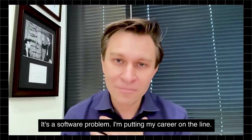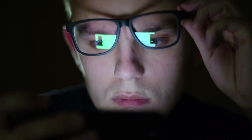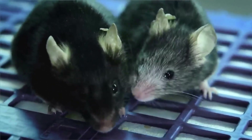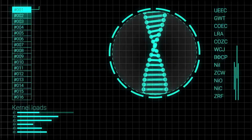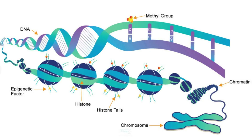It's a software problem — I'm putting my career on the line. What if I told you that these two mice were the same chronological age, but one is physically older because of a software glitch? This glitch is what Dr. David Sinclair and colleagues are betting on as the cause of aging, explaining why some people age faster than others. But what's the evidence supporting this theory, and how can understanding it help us slow aging right now?